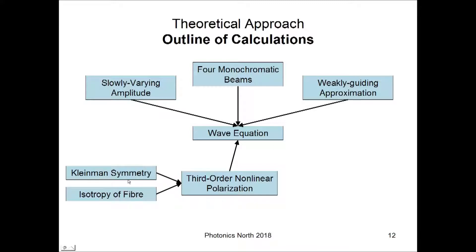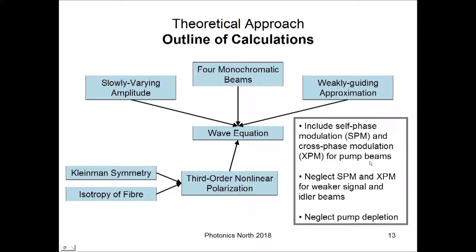The assumption of Kleinman symmetry, which means that we're neglecting the frequency dependence of chi-3, and also the isotropy of the fiber. And both of these together considerably simplify the chi-3 tensor, meaning that there's only one unique element after these conditions are applied. And another few points to make as far as this analysis was that this treatment includes self phase modulation and cross phase modulation for the pump beams, but neglects the same processes for the weaker signal and idler beams, and also neglects pump depletion as well.